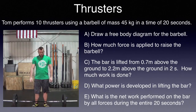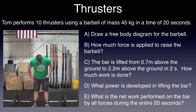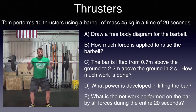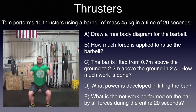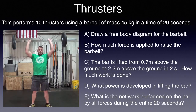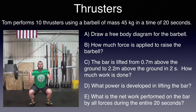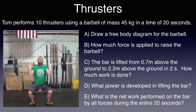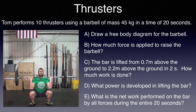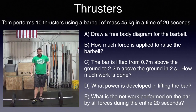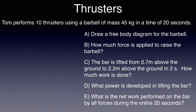Tom performs 10 thrusters using a barbell of mass 45 kilograms, about 95 pounds, in a time of 20 seconds. A. Draw a free body diagram for the barbell. B. How much force is applied to raise the barbell? C. The bar is lifted from 0.7 meters above the ground to 2.2 meters above the ground in 2 seconds — how much work is done? D. What power is developed in lifting the bar? And E. What is the net work performed on the bar by all forces during the entire 20 seconds? Pause the video, take a minute, and solve the problems on the associated problem set worksheet.